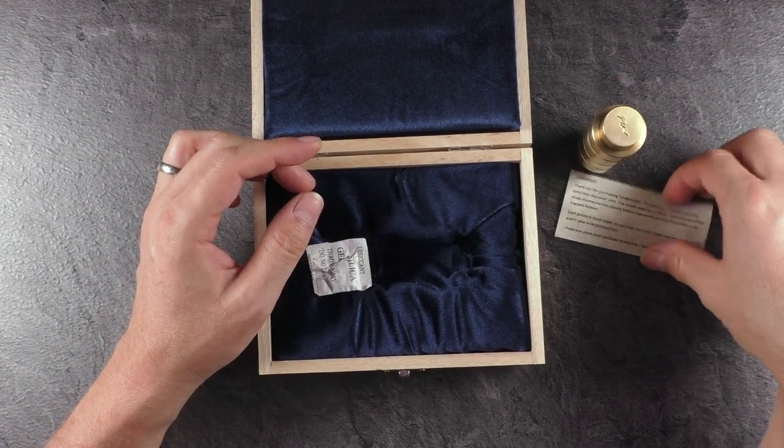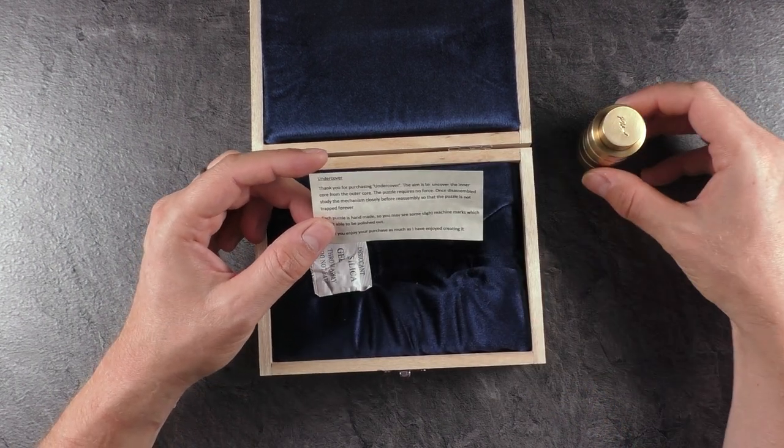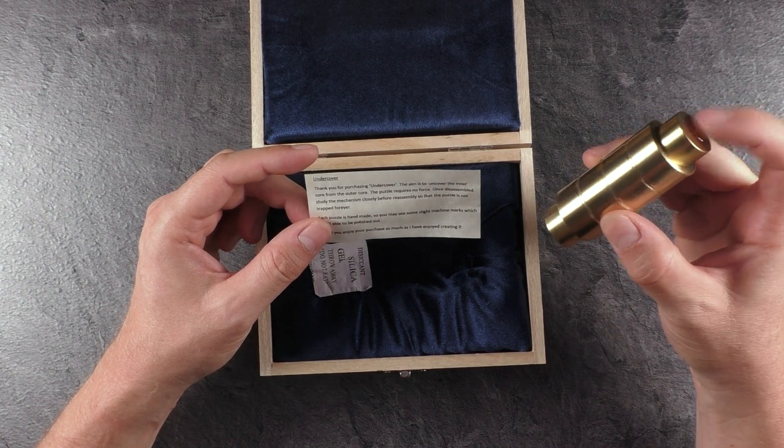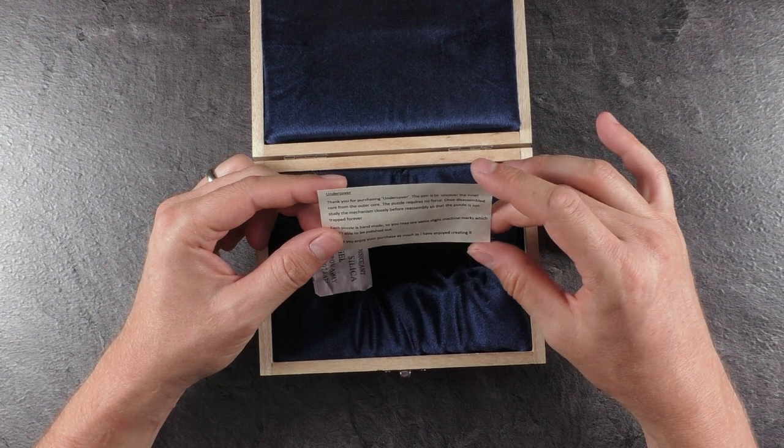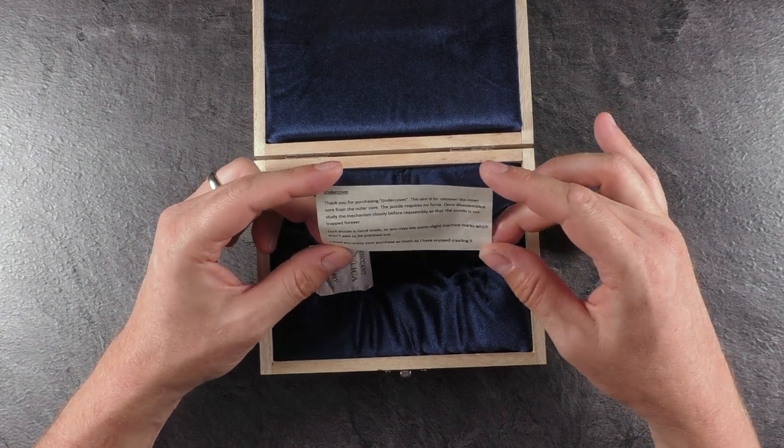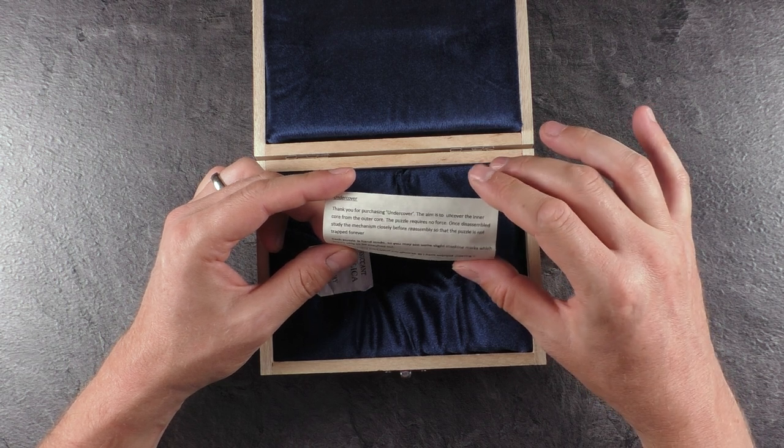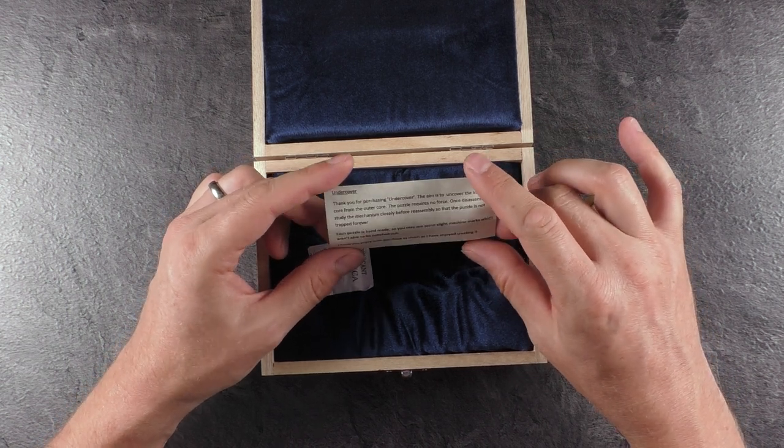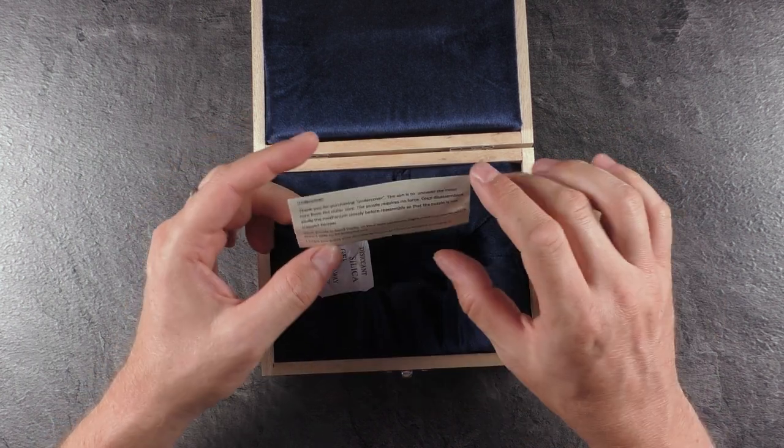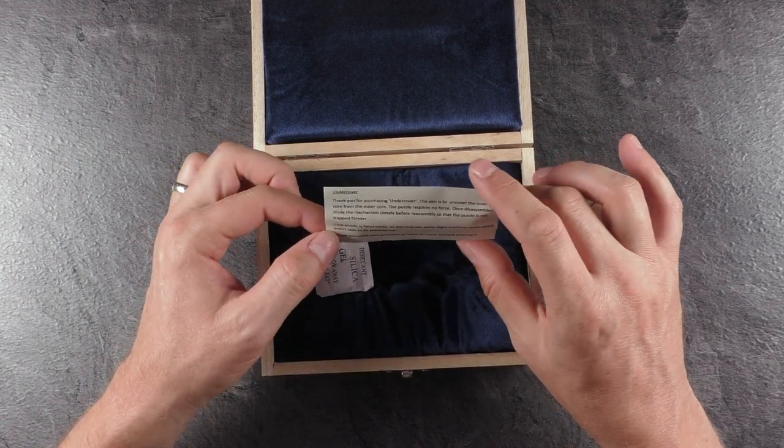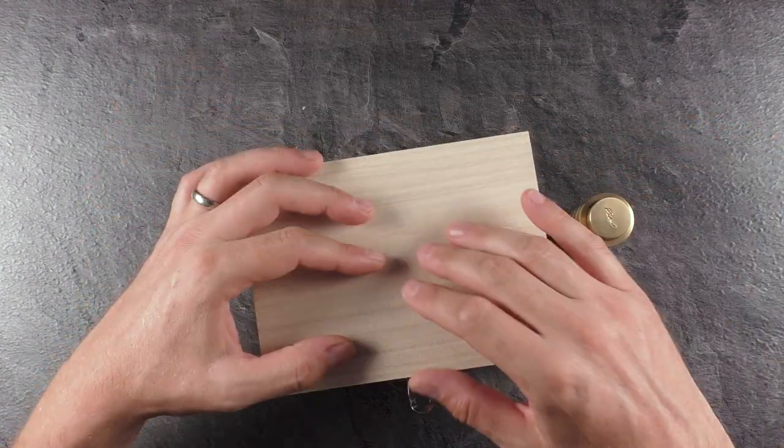And it also comes with this instruction saying thank you for purchasing Undercover. The aim is to uncover the inner core from the outer core. The puzzle requires no force. Once disassembled, study the mechanism closely for reassembly, so that the puzzle is not trapped forever. That's an interesting detail. And each puzzle is handmade, so you may see some slight machine marks which aren't able to be polished out. I hope you enjoy your purchase as much as I have enjoyed creating it.